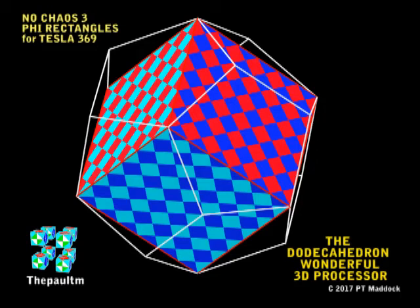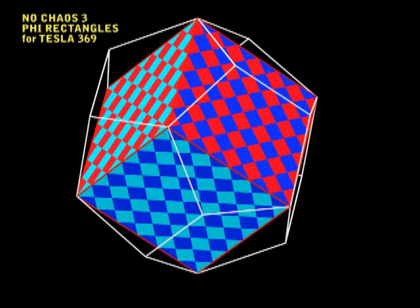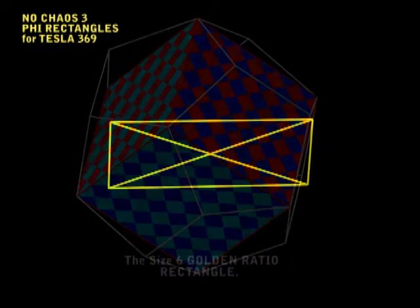Hi, this is Paul again. I'm going to call this video No Chaos 3. In my last two videos, No Chaos 1 and No Chaos 2, I showed how important the golden ratio rectangles can be. Well, maybe only I think they're important.